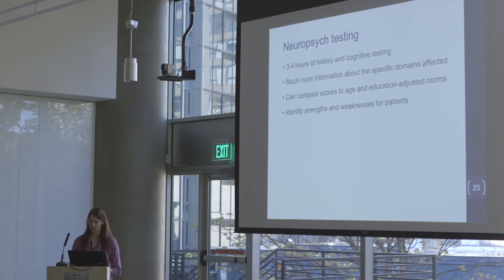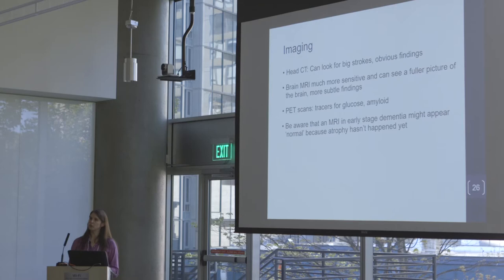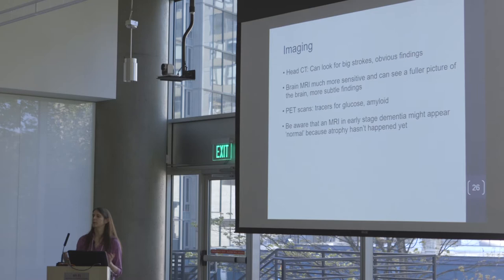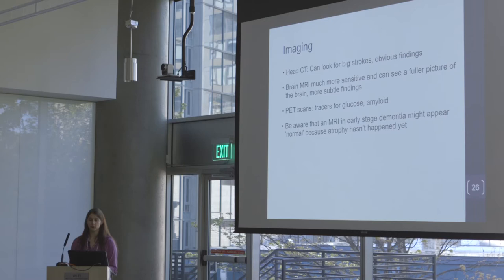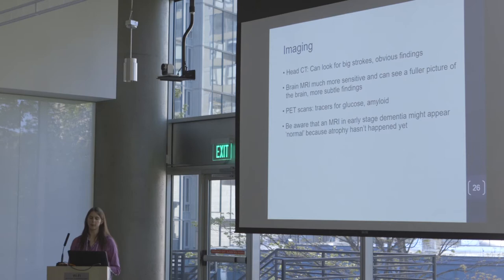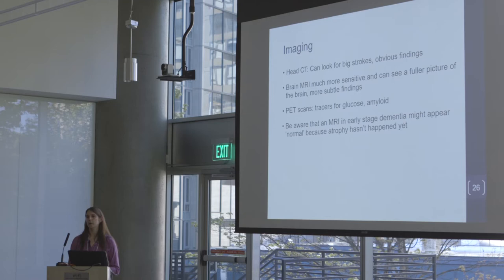We get a lot of imaging. Head CT looks for big, obvious things; usually we're getting an MRI — a brain MRI with no IV involved, very safe. We'll also get PET scans, which are functional: can the neurons take up glucose? MRI is just a fancy picture, whereas a PET scan is functional. If someone has dementia and it's very early, their MRI might actually look normal — so we want to counsel primary care doctors not to tell patients 'you'll never get Alzheimer's' just because an early MRI looks normal.